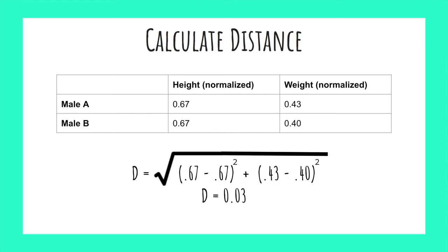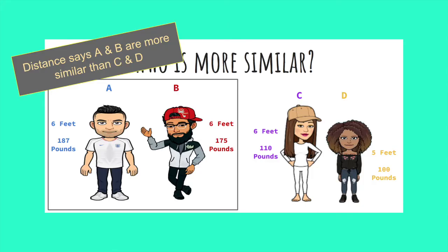Now if we plug these values into our distance formula, we see A and B have a distance of 0.03. After scaling and calculating the distance of person C and D, we get a distance of 0.34. This means our distance metrics show A and B are much more similar, which makes way more sense. So hopefully that illustrates why scaling data is so important.